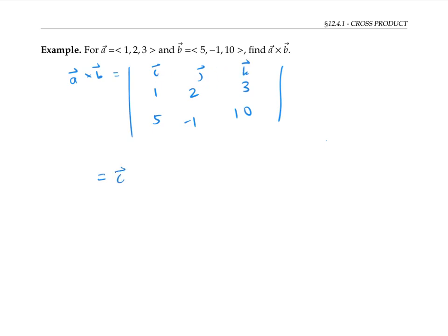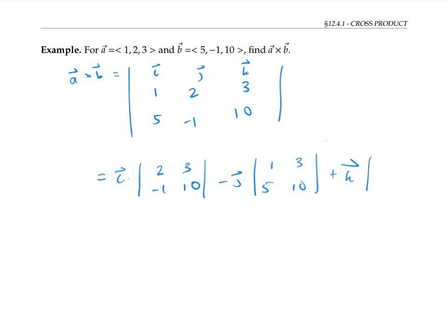I get i times the determinant of the sub-matrix 2, 3, −1, 10 — that's what I get when I cross out the row and column for i. Then minus j times the sub-matrix 1, 3, 5, 10. Then plus k times the sub-matrix 1, 2, 5, −1.